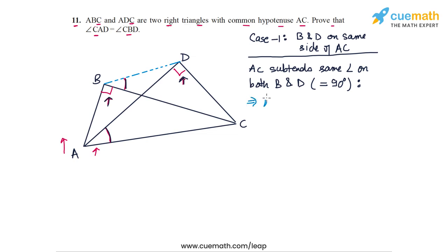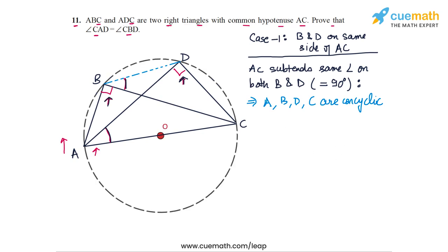This means that A, B, D, C are concyclic points — they lie on a circle. The result being used here is that if a segment subtends equal angles at two points on the same side of that segment, then the four points are concyclic. So ABDC is a cyclic quadrilateral.